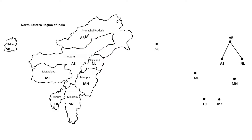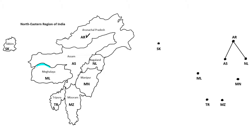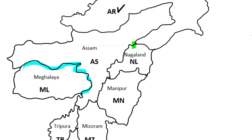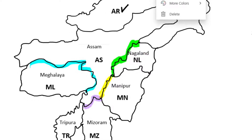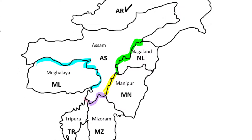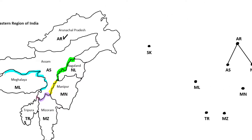Let's go to AS. We've already shown the connection between AS and AR, so let's look for any other common boundaries. AS is also connected to ML. NL shares a common boundary, MN, MZ, and it shares a tiny little common boundary with TR. So we have five more connections to draw between AS and other states.